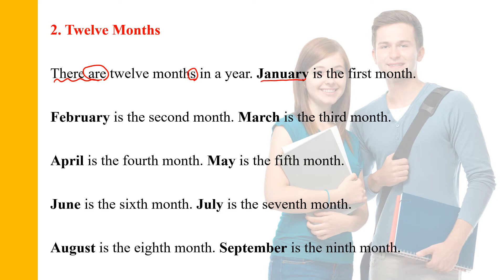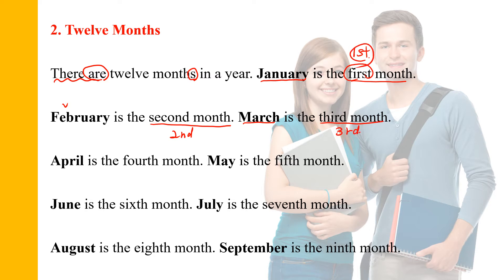January, the first month. February is the second month — January and February. March is the third month. First, second, and third.